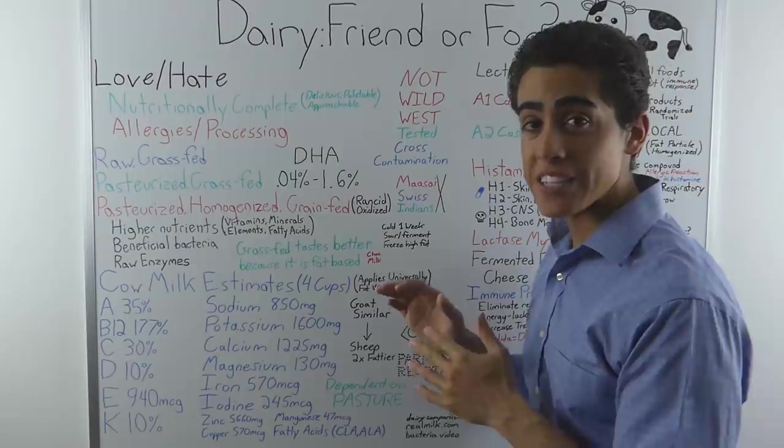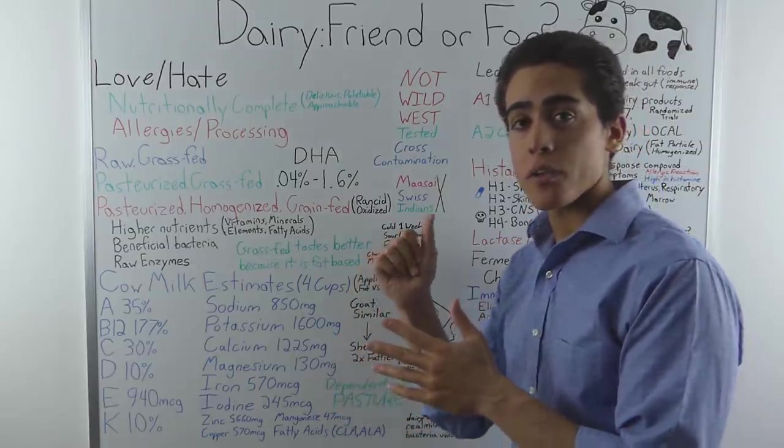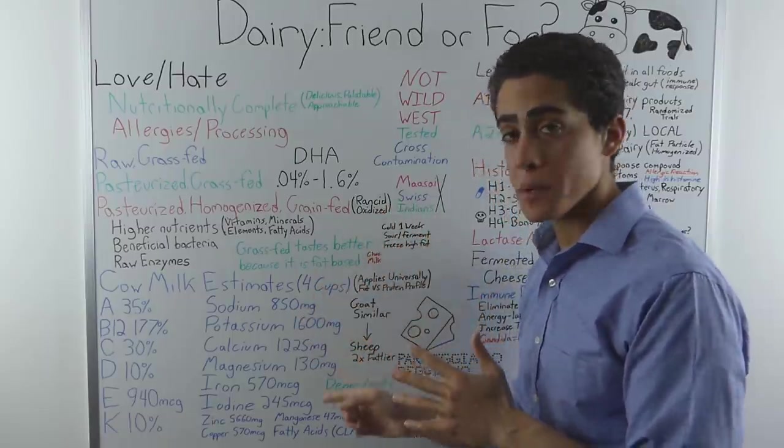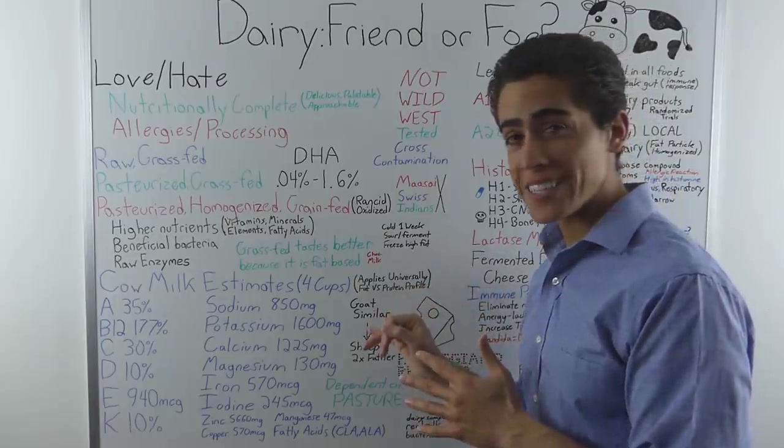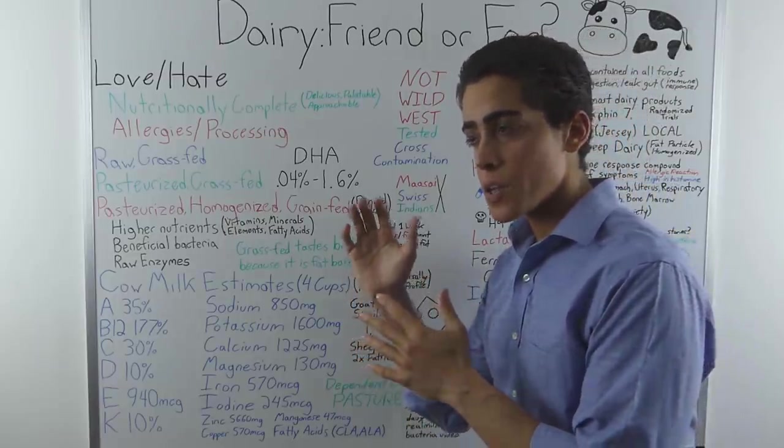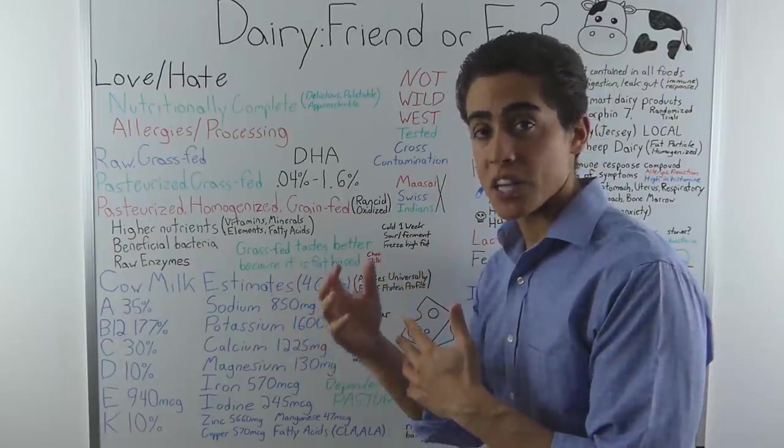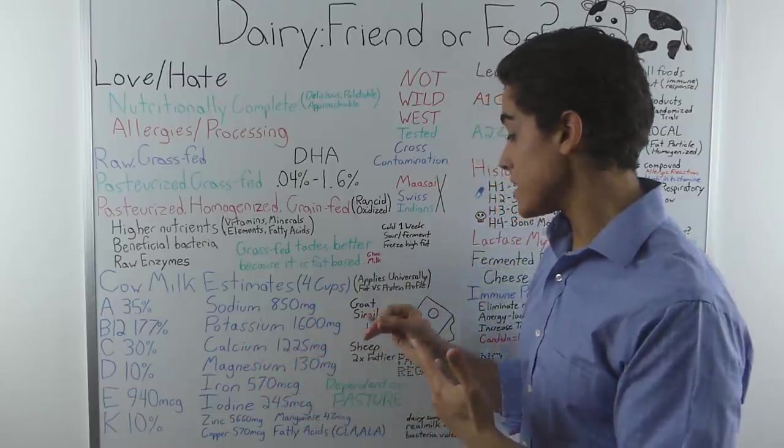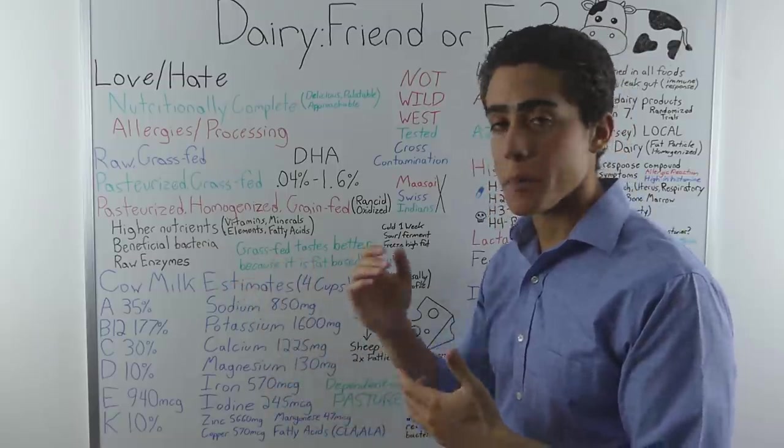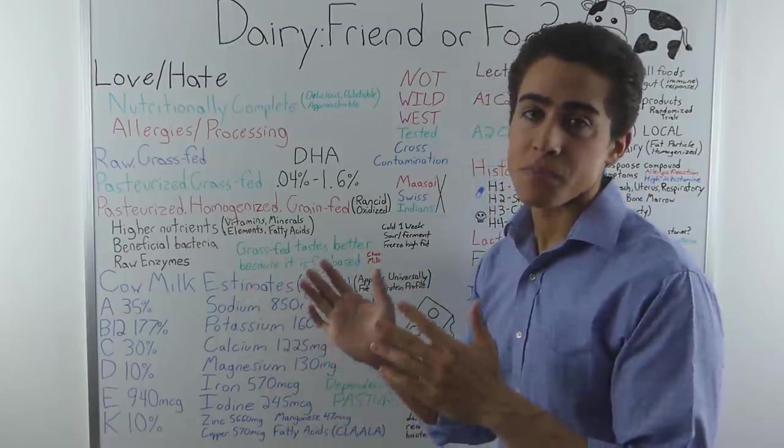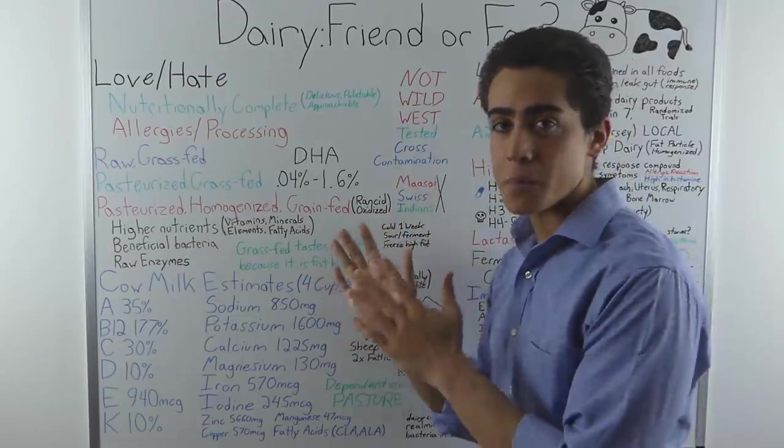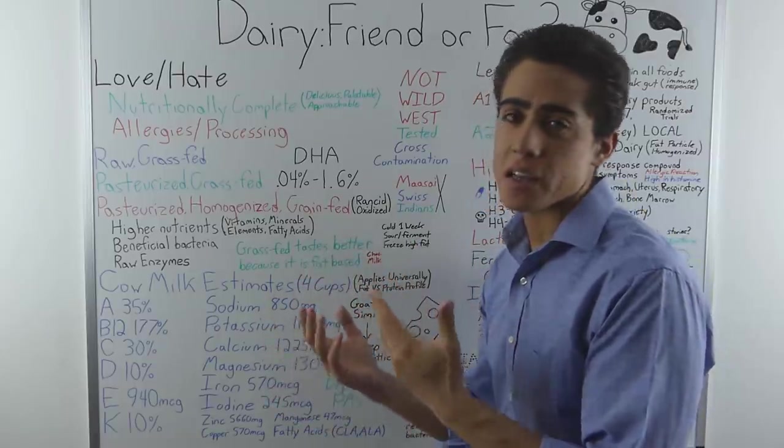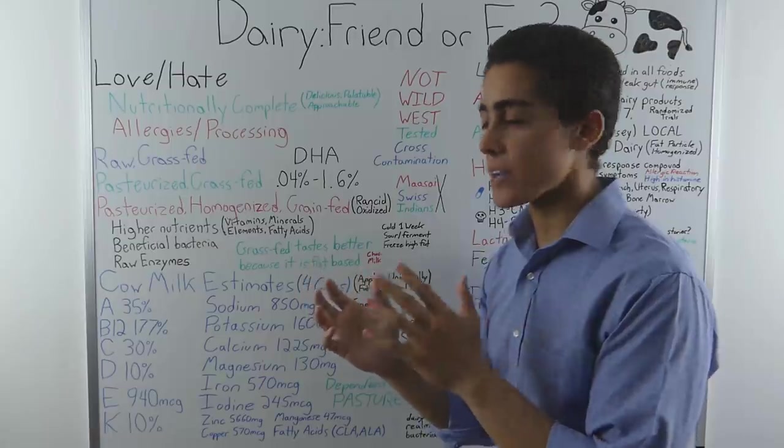Now, this nutrition applies universally to every single dairy product, whether it's milk, cream, butter, cheese, kefir, you name it. If it was a high-quality milk product, it will have nutrition. The difference is the fat versus the protein profile. Something like butter or cream that is more fat-based with less protein will have more fat-soluble vitamins and less water-soluble vitamins, whereas a protein-based food like milk will have higher amounts of B12 and vitamin C. That's the main difference. Both cheese and milk, for instance, are nutritionally complete. It's just two slightly different forms. And depending on the bacterial culture, the nutritional profile can change slightly.